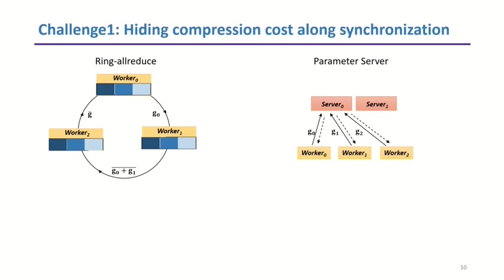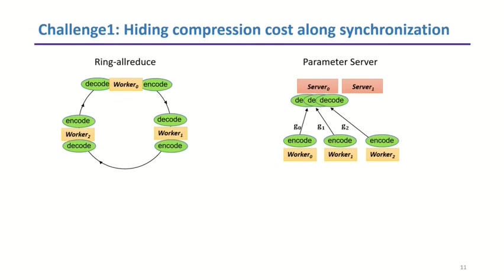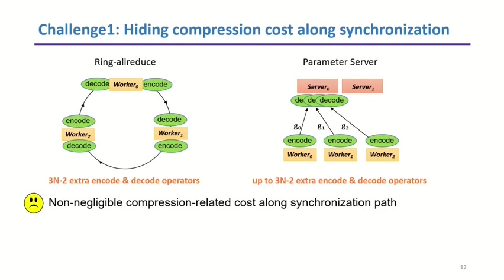How to minimize it? The first system challenge we met is how to hide compression costs along synchronization. In the two popular synchronization architectures, AllReduce and Parameter Server, the compression cost stems from the fact that it's impossible to directly aggregate compressed gradients. Thus, at every data transmission step, a decode operator must follow message receiving and precede aggregation. In addition, newly created gradients must be encoded before sending out. This gradient synchronization is not global and consists of many small steps. Enabling compression would introduce extra operators to both architectures. However, the current design of the two architectures fails to hide this non-negligible overhead.